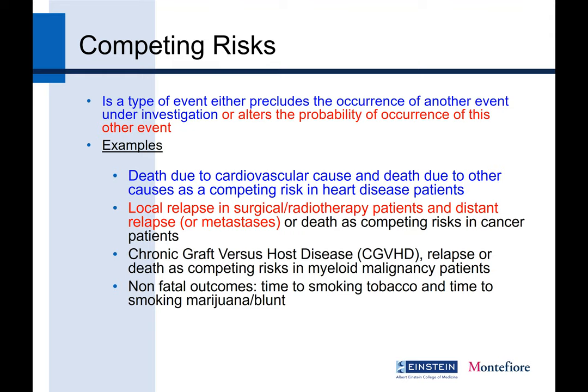Newer methods were developed to handle these problems. One example is chronic graft-versus-host disease (cGVHD) and relapse — you can have more than one type of competing event. In a bone marrow transplant situation, you can have cGVHD, a relapse of the disease, or death — there can be a lot of issues.